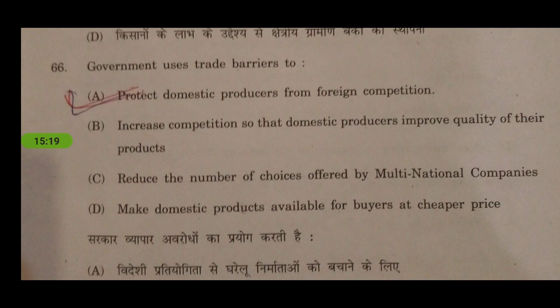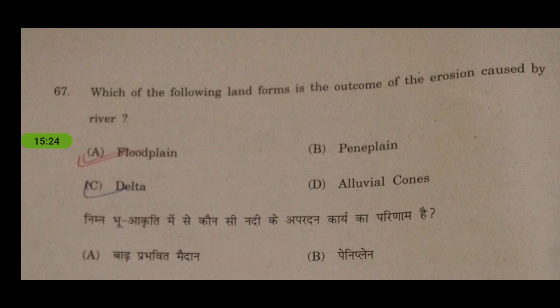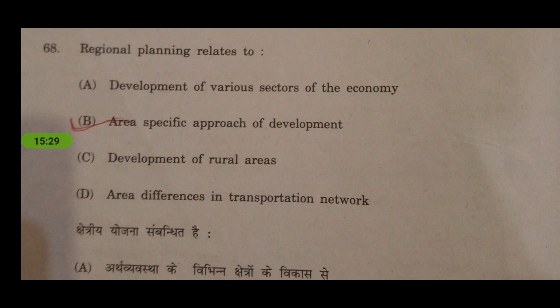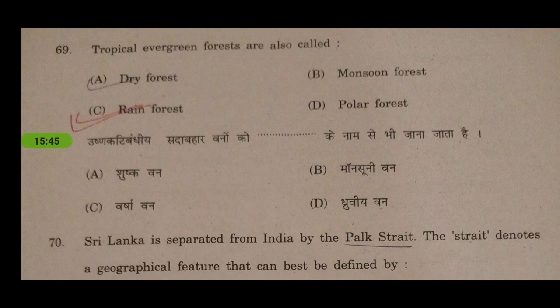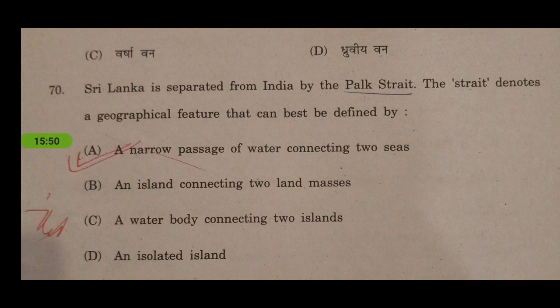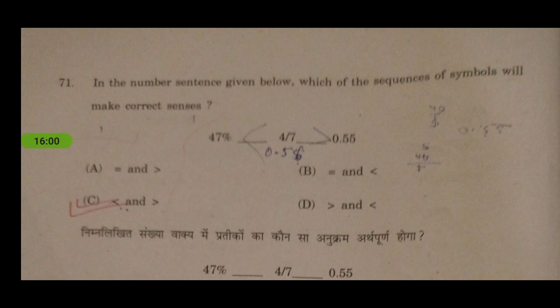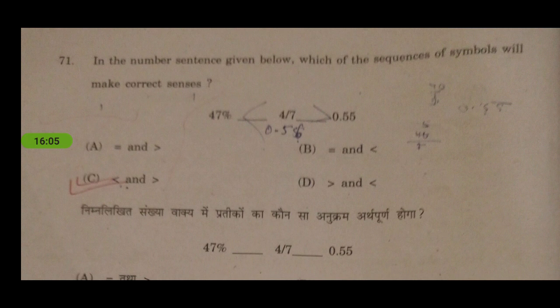Which of the following landforms is the outcome of erosion caused by rivers? The answer is floodplain. Regional planning relates to an area-specific approach of development and is a sub-part of urban planning. Tropical evergreen forests are also called rainforests. Sri Lanka is separated from India by Palk Strait — a strait is a geographical feature best defined as a narrow passage of water connecting two seas.